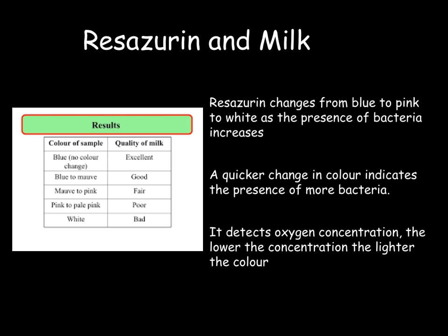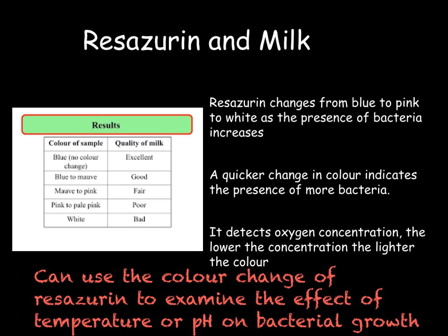So if there is very little bacteria in the milk, or very little respiration having taken place, the resazurin will stay blue. If, however, there are lots of bacteria present, then we will get a more striking colour change. We can use this test to examine how different conditions, for example temperature or pH, affect the growth of bacteria. We can heat milk to different temperatures, leave it for the bacteria to respire, then add in our resazurin and examine the colour change over different periods of time. The sample which has had the smallest colour change shows that bacterial growth is slowest there, and the sample with the most drastic colour change shows that bacteria has grown the fastest.